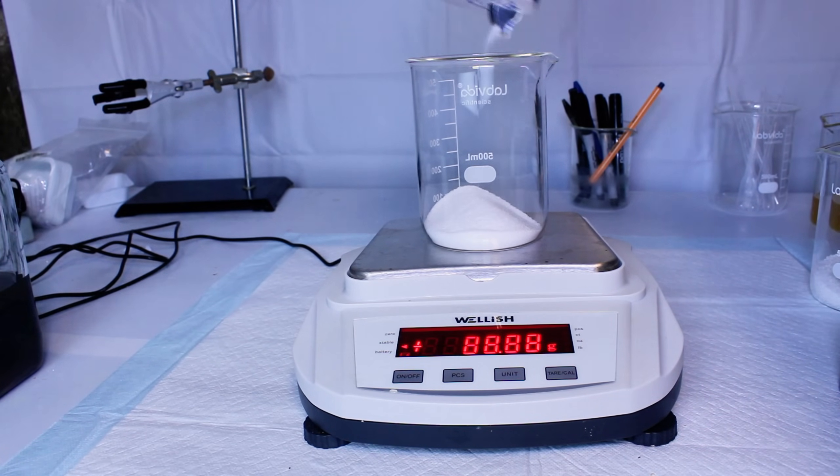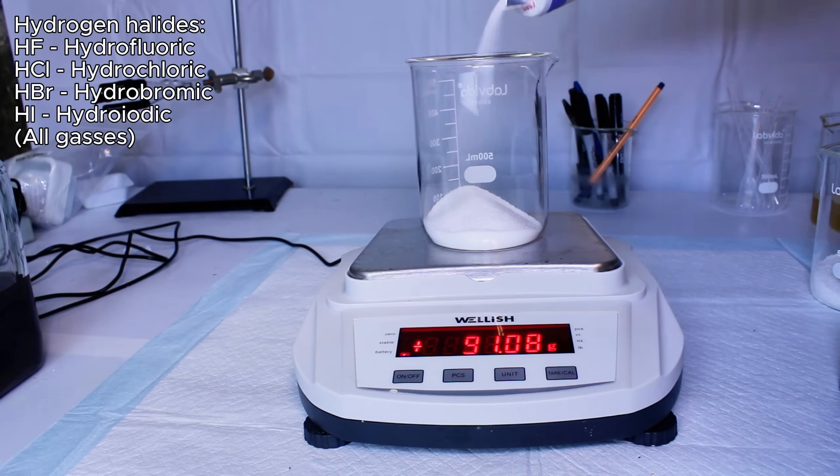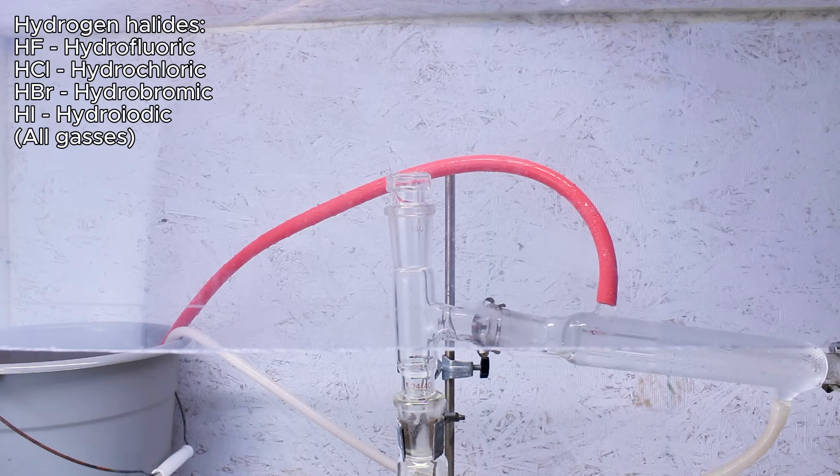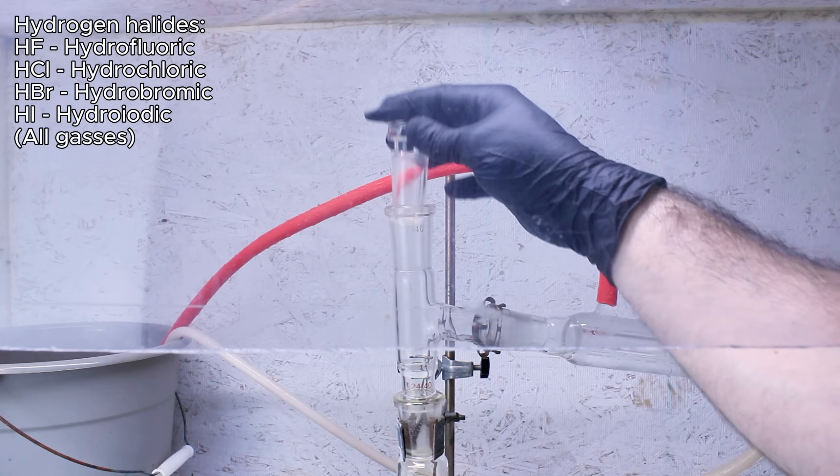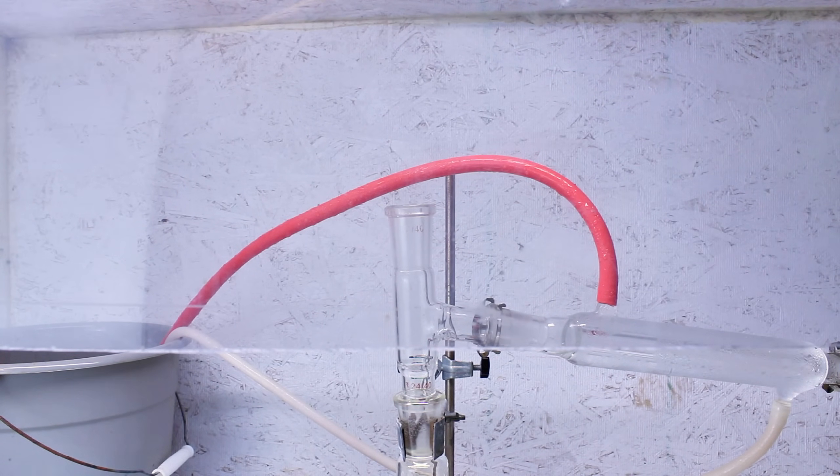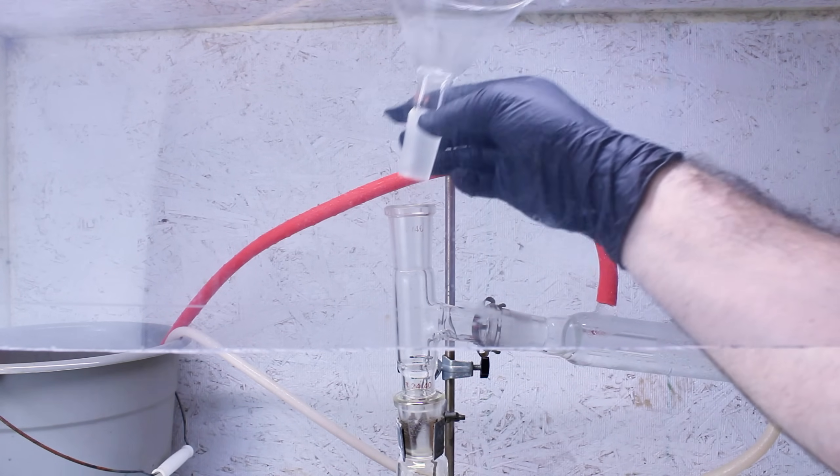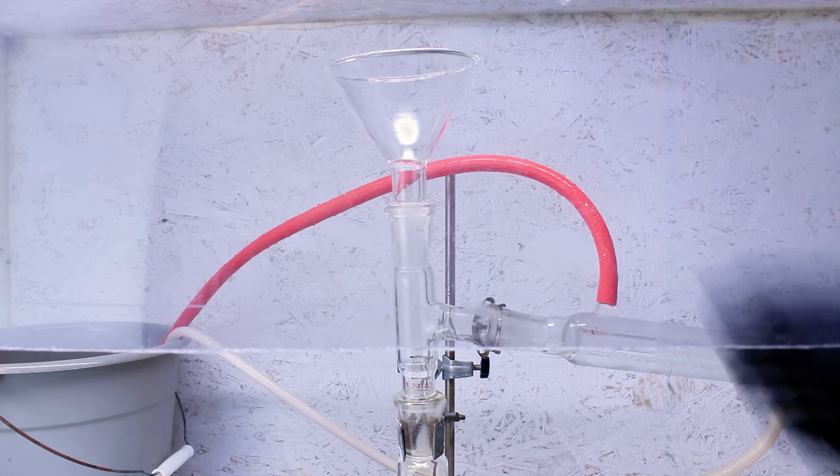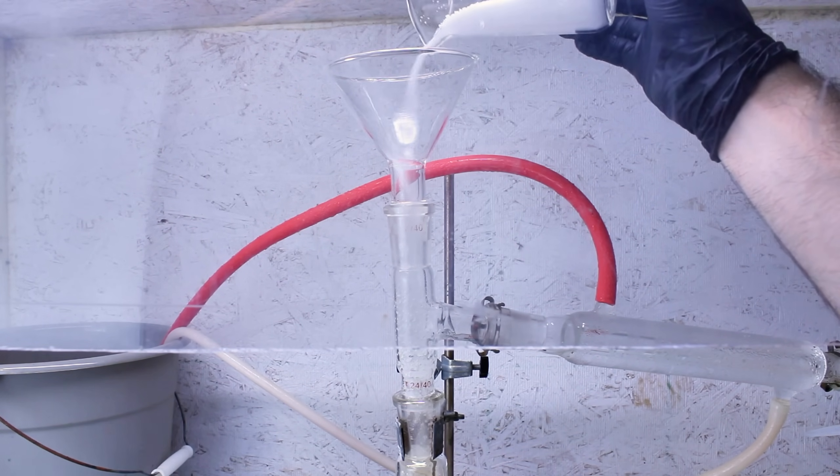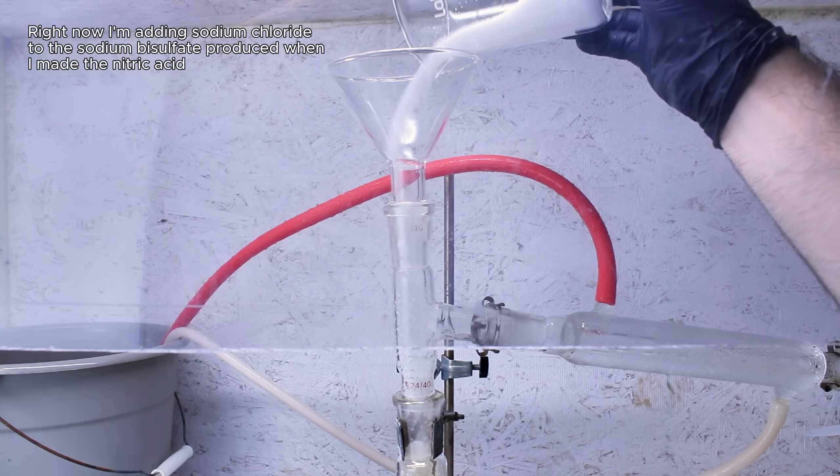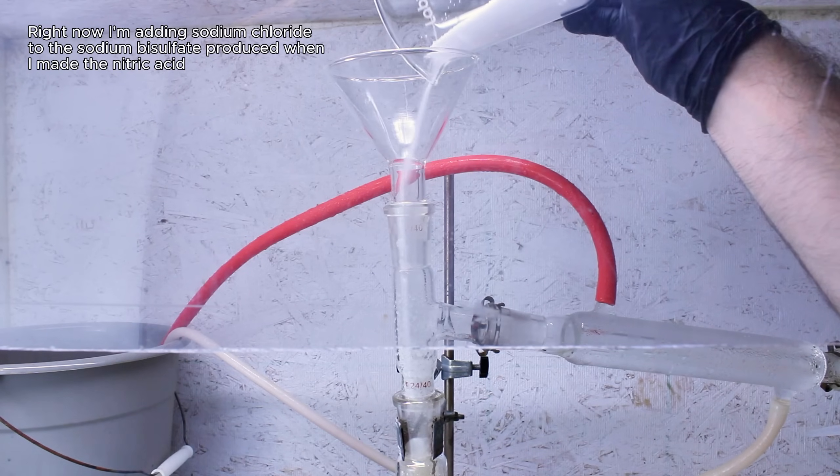Now unlike sulfuric and nitric acids which exist as liquids, the binary hydrogen halides resulting from the reactions of fluorine, chlorine, bromine, and iodine with hydrogen all exist as gases. That said, the binary hydrogen acids are really just hydrogen halides dissolved in water, which means there is no such thing as 100% hydrochloric, hydrofluoric, hydrobromic, or hydroiodic acid, in the same way that there's no such thing as a 100% ammonia solution.